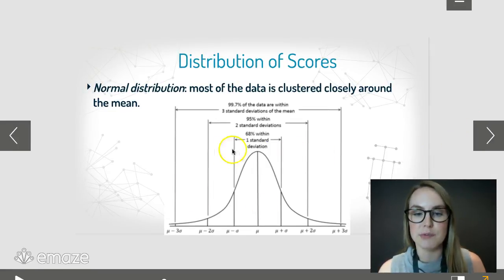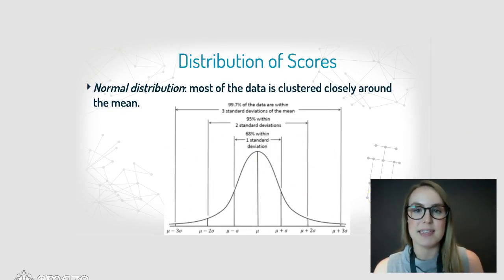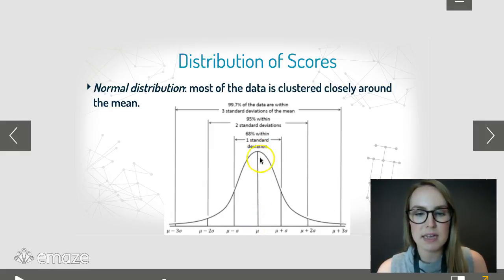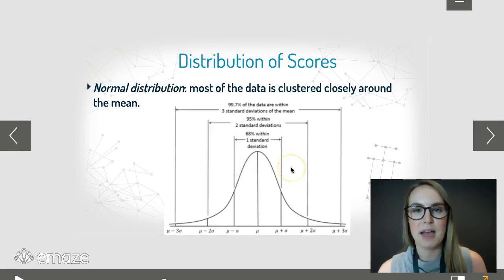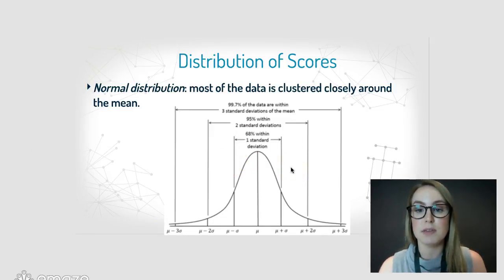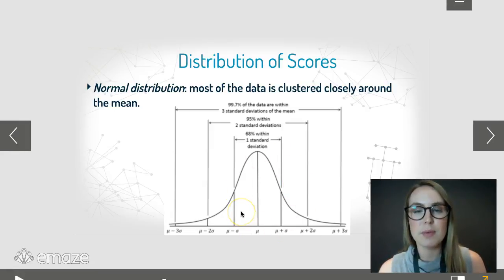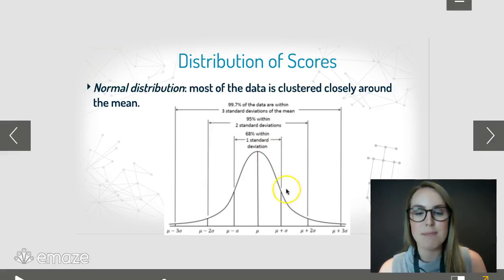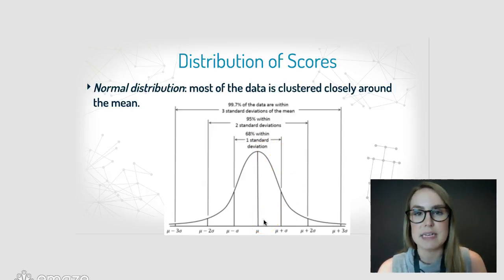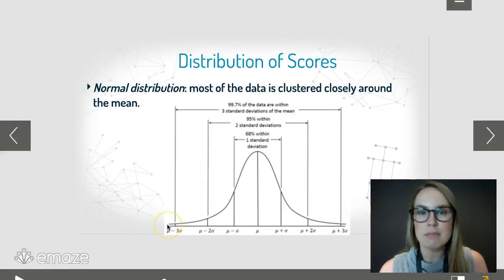The bell curve, often referred to as a normal distribution, should look familiar from maths. You can see that the mean is in the middle, and the graph represents the number of people or responses. Most people have scored closely around the mean — if we were looking at a class and their results, perhaps the mean score was a C, and most students would score around a C, with very few A-pluses or E's.